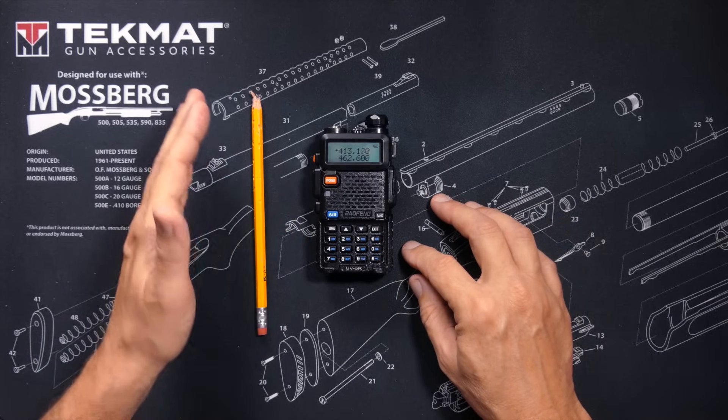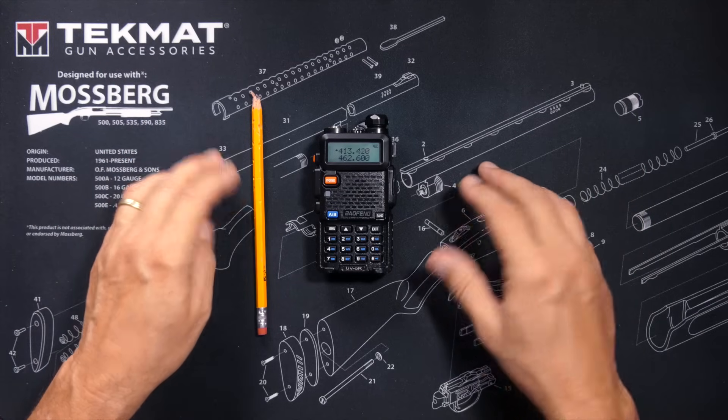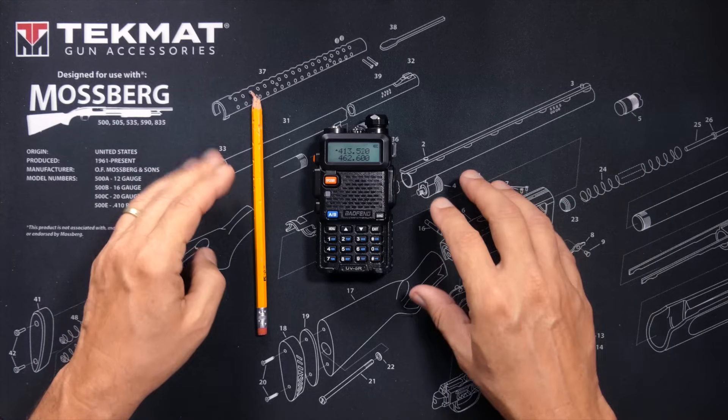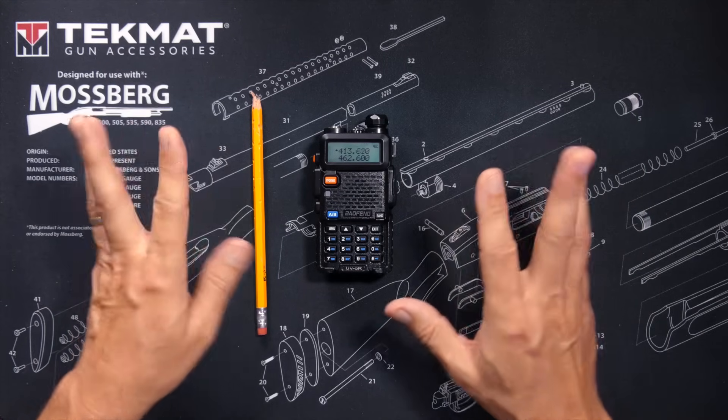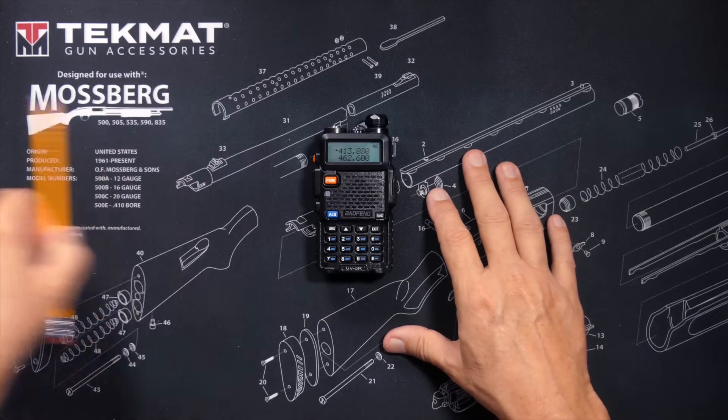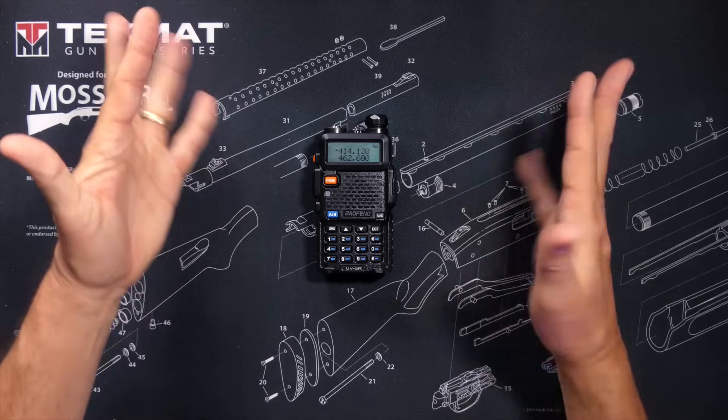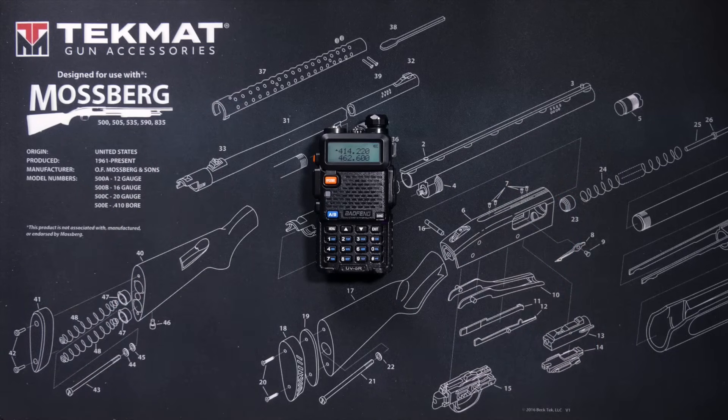They go from about 400 megahertz up to about 500 megahertz, and the lower range goes from about 135 megahertz up to about 175 megahertz. The exact range will vary depending on how old your Baofeng UV5R is.